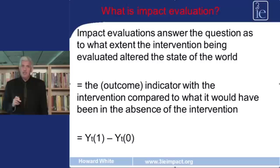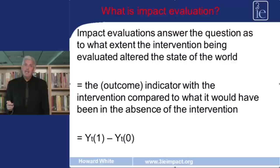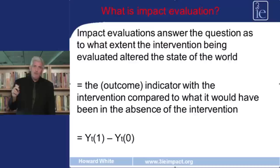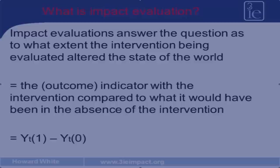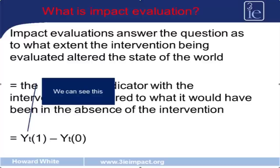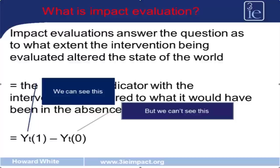In the expression, YT1 — where the 1 refers to the fact that we're measuring the outcome in project areas given that the project took place — we subtract what would have been the outcome had the project not taken place: YT0, the same outcome measured at the same point in time, but for the same people had the project not taken place. The problem is that we can measure outcomes in project areas after the project, but we cannot measure outcomes for the same people in the same place at the same point in time as if the project had not taken place, because the project has taken place.